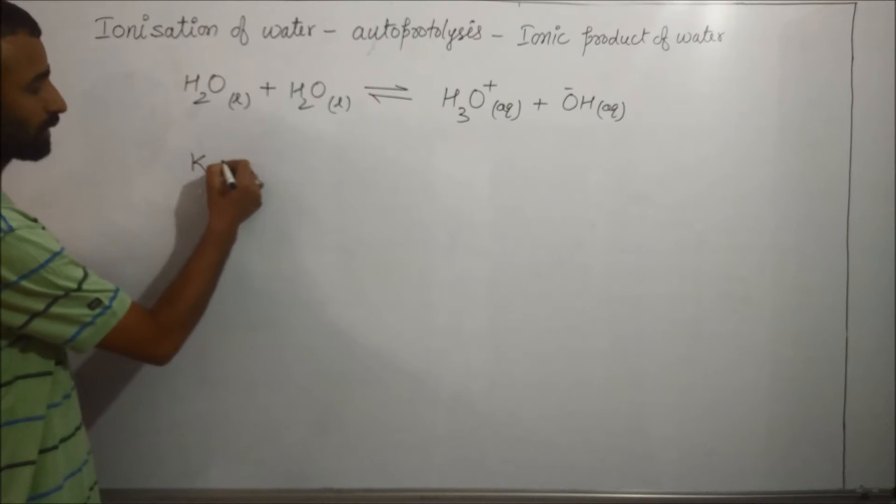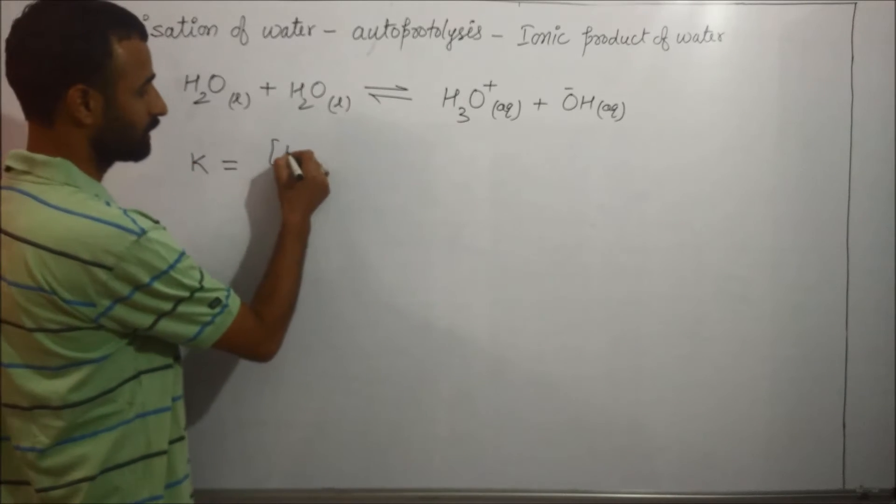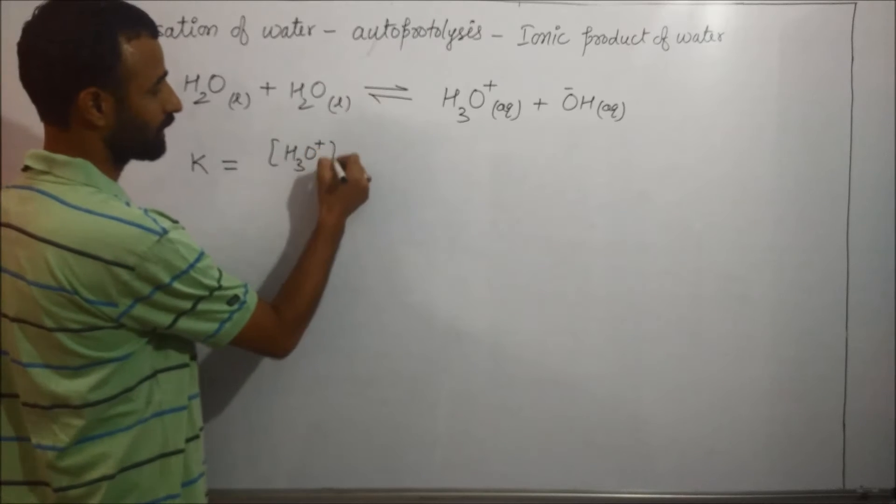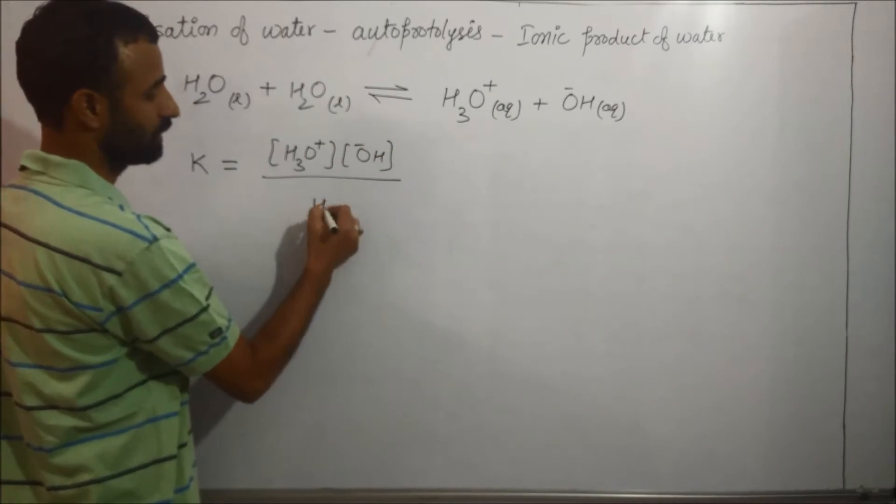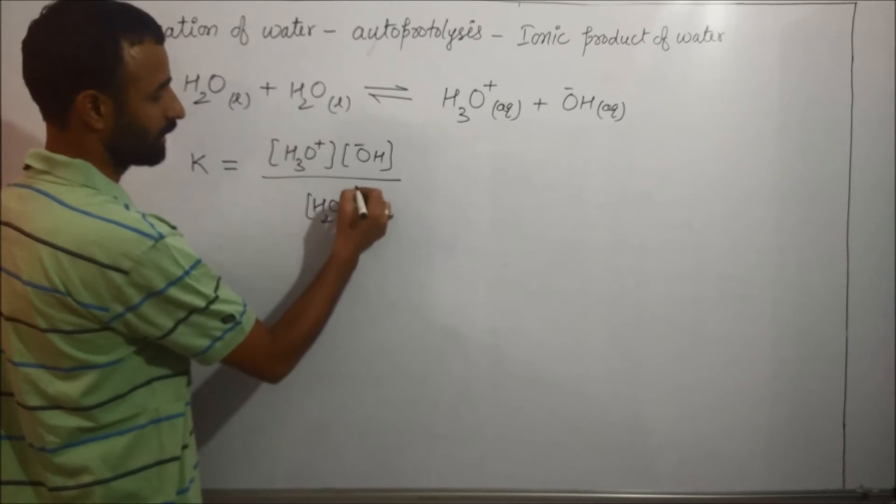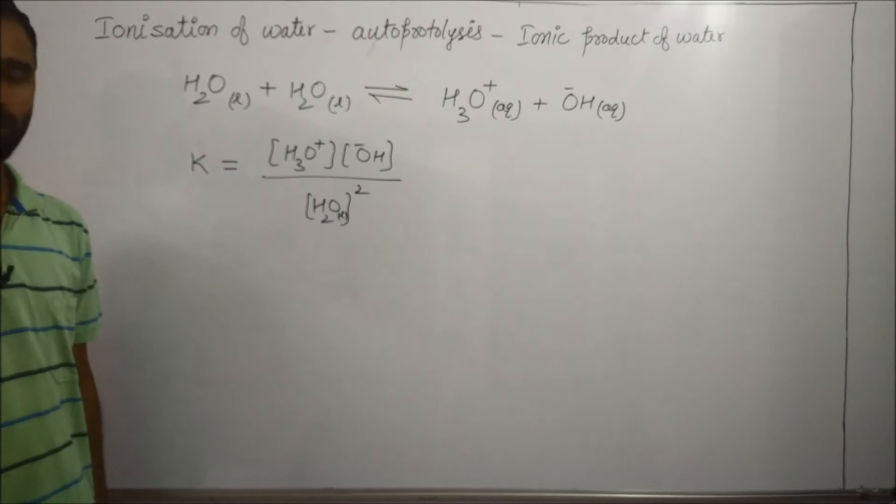According to law of chemical equilibrium, the equilibrium constant is H3O+ ion concentration, OH- ion concentration, divided by H2O liquid power 2. But you know, this pure liquid has constant molarity.